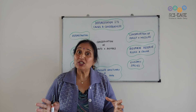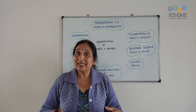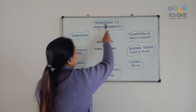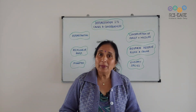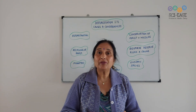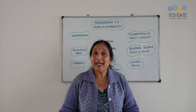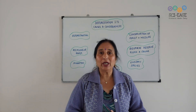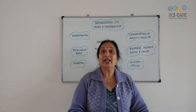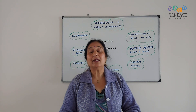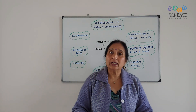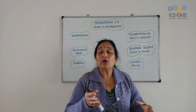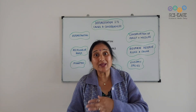There are so many topics and we will study them in detail. The first topic is deforestation — its causes and consequences. What do you mean by deforestation? That is the cutting of the forest. Why are forests cut down? Due to the increase in population, land is needed for building houses, industries, and for cultivation.